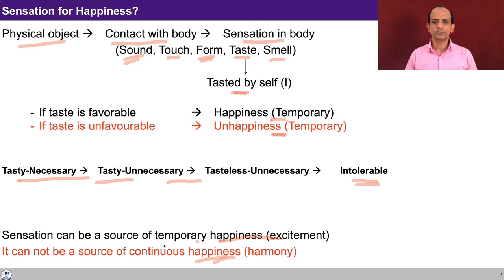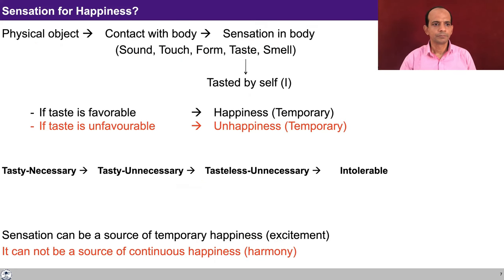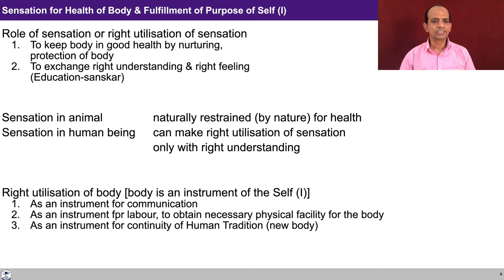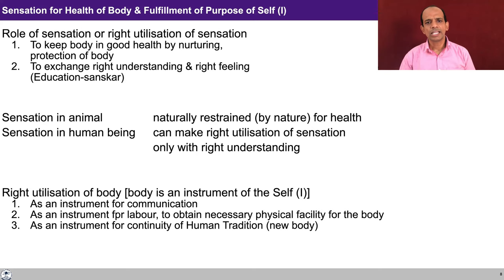Happiness is essentially to be in harmony, and to have continuity of happiness one has to ensure harmony in continuity — and that is only possible by contemplation, understanding, and realization. So what could be the right utilization of sensation? One is to keep the body in good health by nurturing and protecting the body, and the second is to exchange right understanding and right feeling through education and sanskar. When conducting this lecture, this is a part of education and sanskar — exchanging right understanding and right feeling through the sound of voice and the sight of slides.